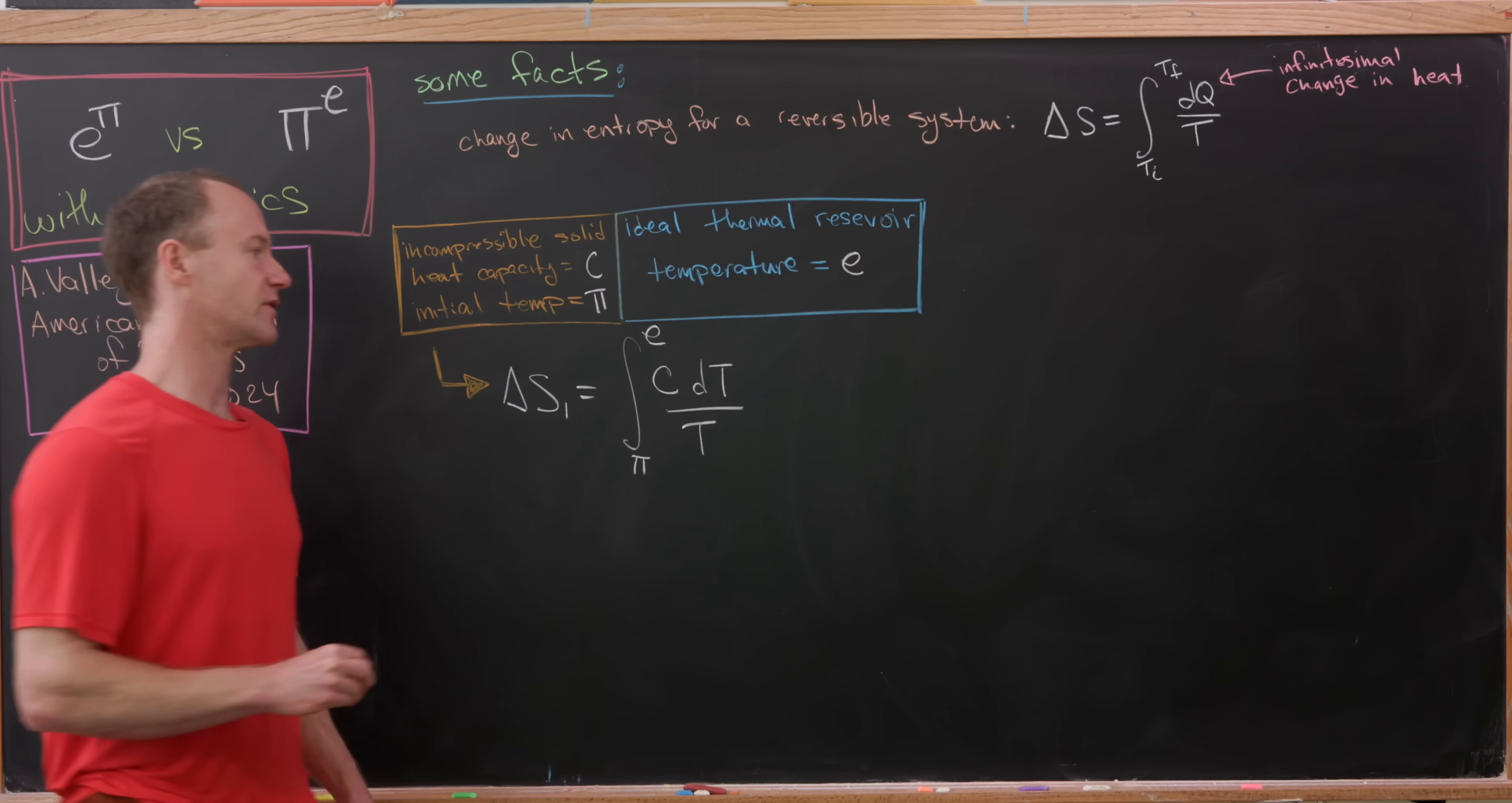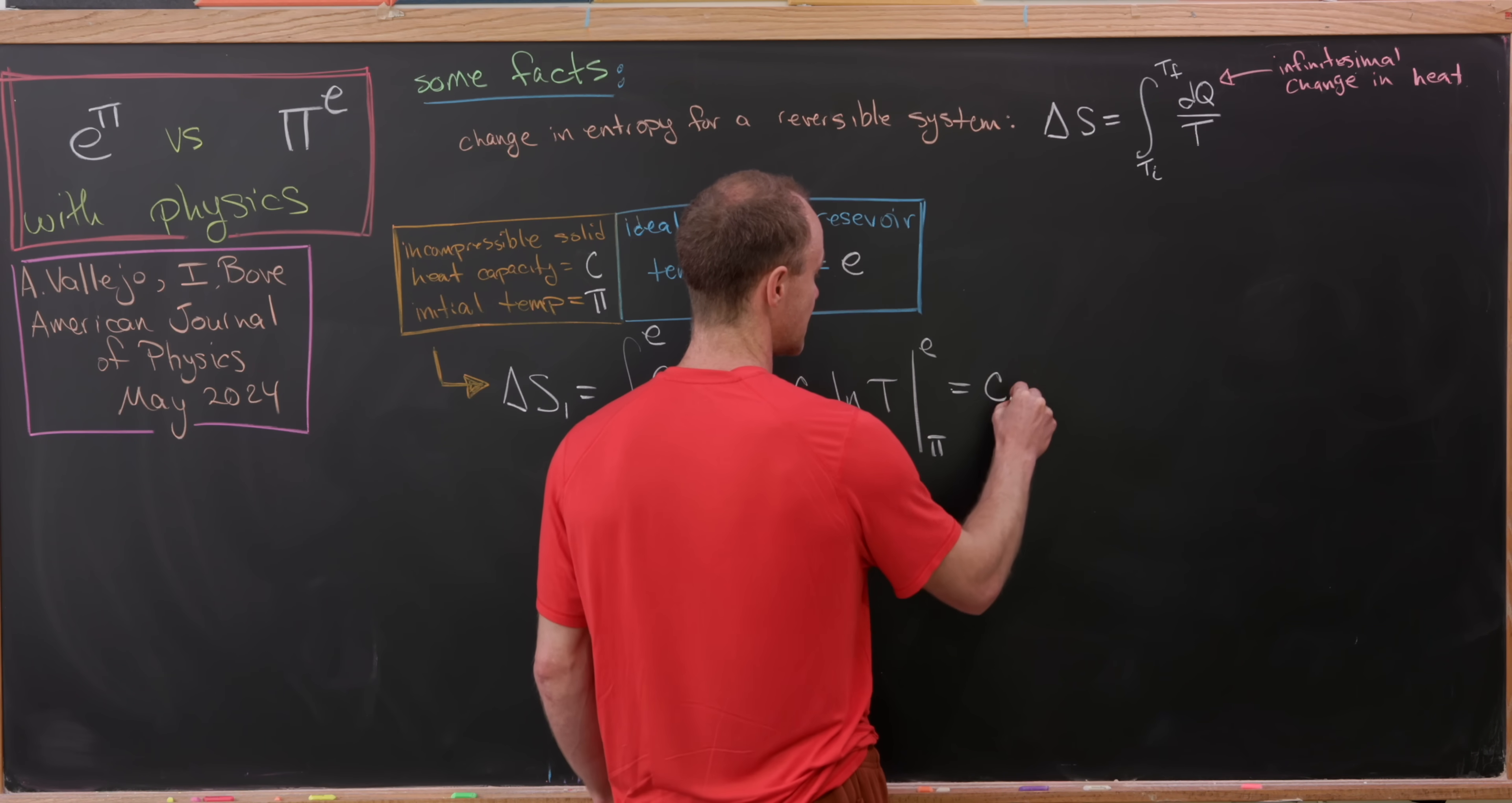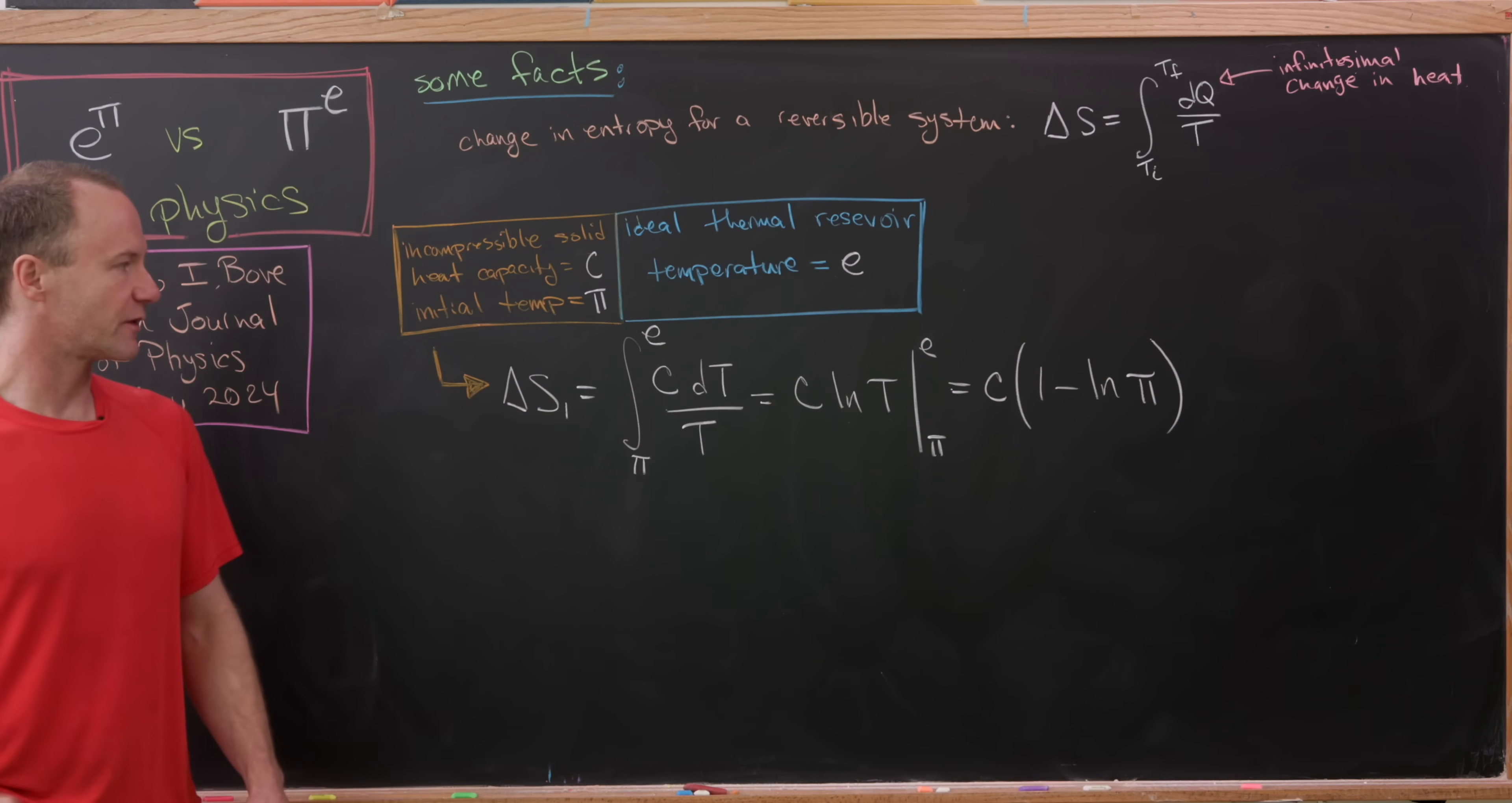But that's a fairly simple integral. That's going to give us C times the natural log of T evaluated between pi and E, which we can calculate out to be C times the natural log of E, which we know to be equal to 1, minus the natural log of pi. Okay, so there we've got it. We've calculated the change in entropy for this first thing, this incompressible solid.